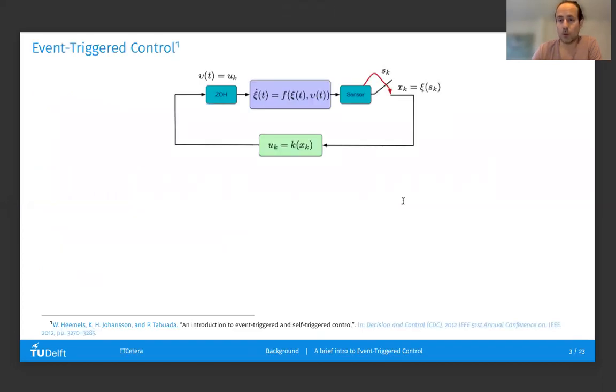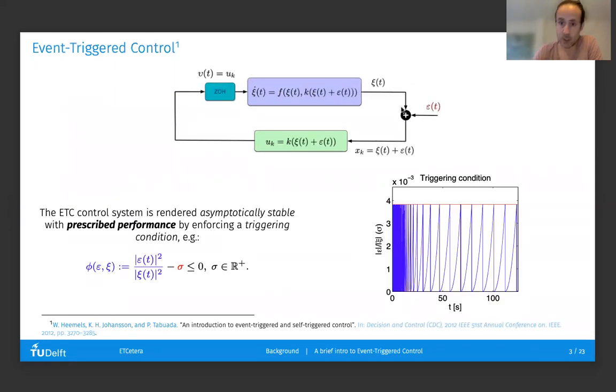First, what's Event-Triggered Control? Event-Triggered Control is essentially a mechanism to implement feedback in control systems in which, instead of closing this switch to measurements periodically, this is done based on events. The way this is done is typically by representing the effect of sample-and-hold by an error signal and designing triggering conditions that depend on this error signal and the actual state of the system, both available to the sensors, so that whenever these conditions hold, then the performance of the control loop can be guaranteed to some specified performance.